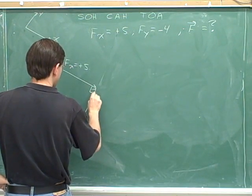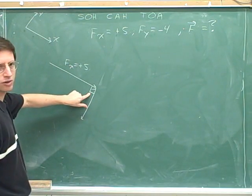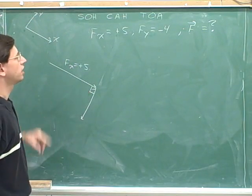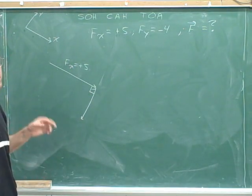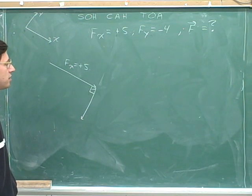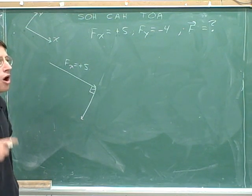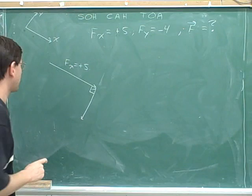Now the key thing is, remember, this must be a 90-degree angle. Make sure you draw a 90-degree angle here. Your components don't have to be horizontal and vertical. In this problem they're not horizontal and vertical, but the components are always perpendicular. Components are always perpendicular.